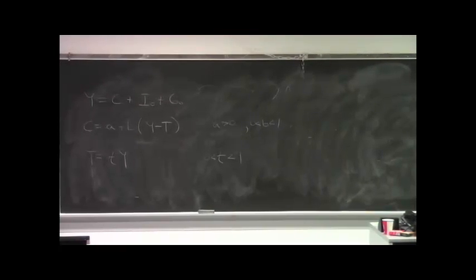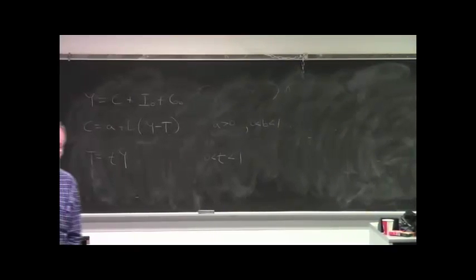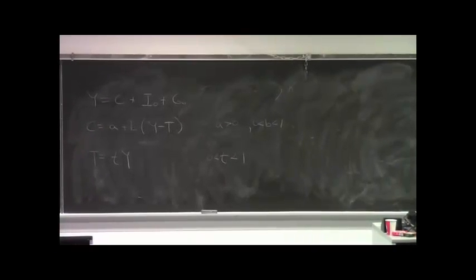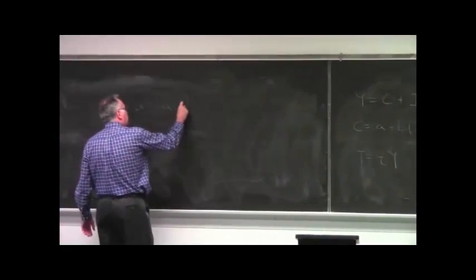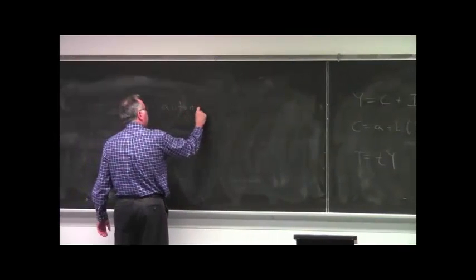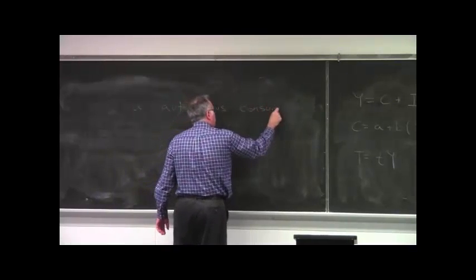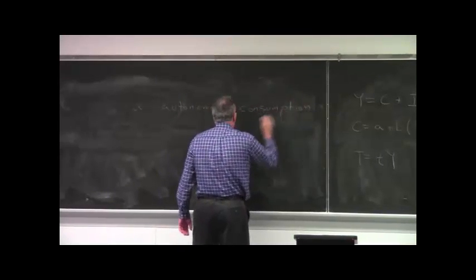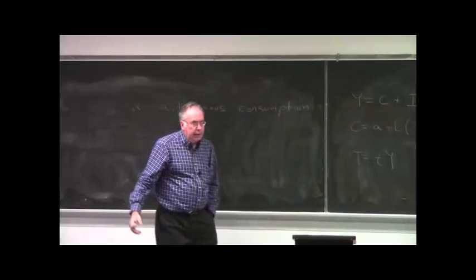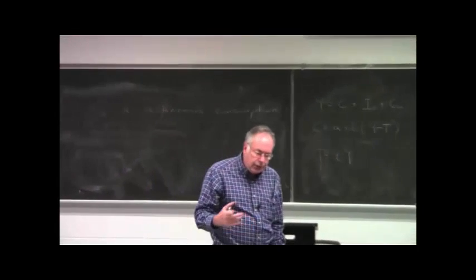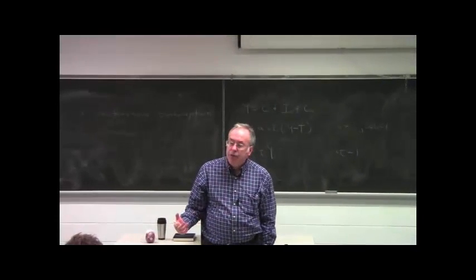Because sometimes you can memorize the phrases, but really not know what they mean. So you should say A is autonomous consumption, which is the level of consumption that consumers would have if their disposable income were 0.